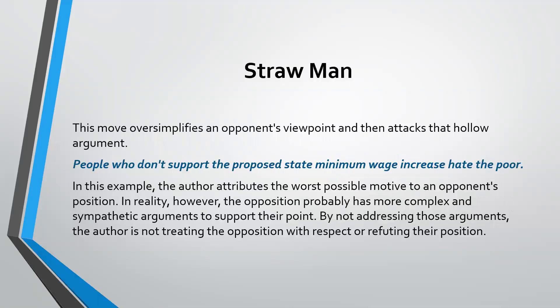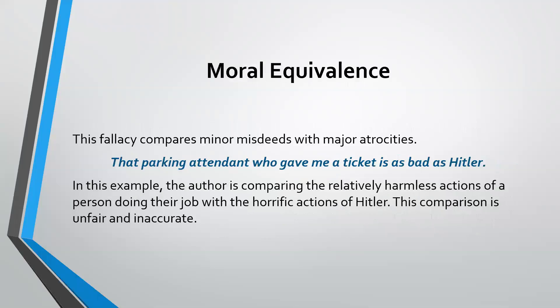The straw man is where you oversimplify the opponent's point of view and then attack that hollow argument. For example: people who don't support the proposed state minimum wage increase hate the poor. Moral equivalence is a fallacy that compares minor misdeeds to major atrocities — for example: the parking attendant who gave me a ticket is as bad as Hitler. Perfect examples.